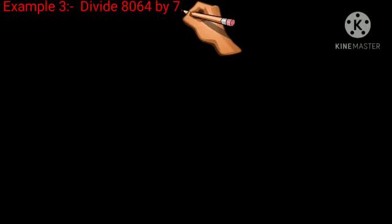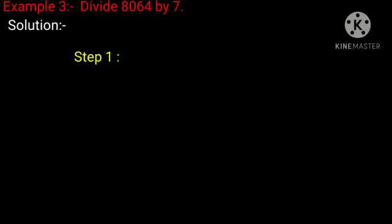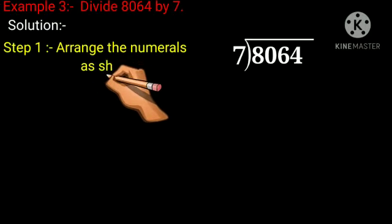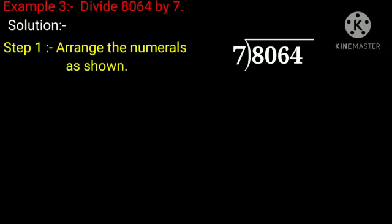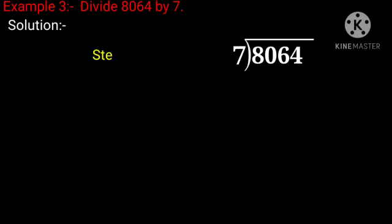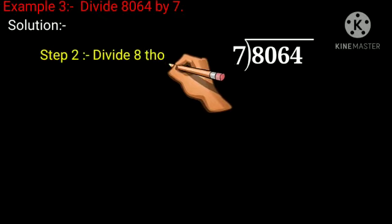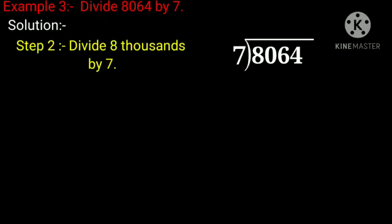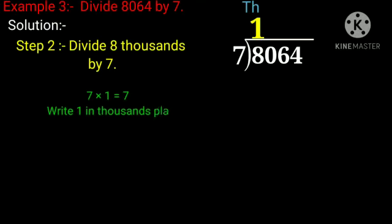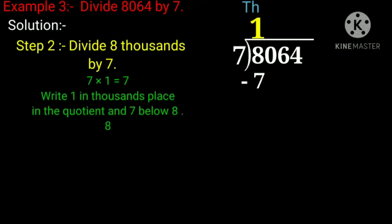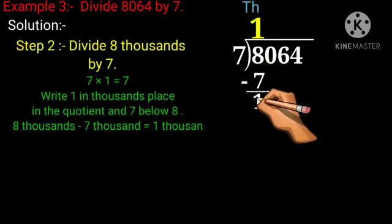Example 3: Divide 8064 by 7. Solution. First, arrange the numerals as shown. Now compare the leftmost number with the divisor. The leftmost number here is 8 and the divisor is 7. Since 7 is smaller than 8, we can divide 8 by 7. Divide 8 by 7. 7 ones are 7 and 7 twos are 14 which is greater than 8. So we take 7 multiplied by 1 equals 7. Write 1 in the thousands place in the quotient and 7 below 8. 8 minus 7 equals 1.